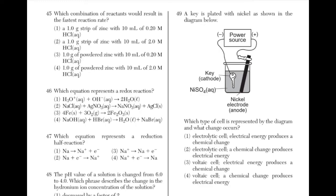Which combination of reactants would result in the fastest reaction rate? Answers with a strip should be eliminated because powdered substances will have a greater surface area. Between answers 3 and 4, the answer is 4 because 2 M HCl is a greater concentration than 0.2 M HCl.